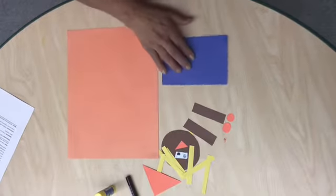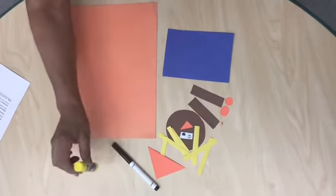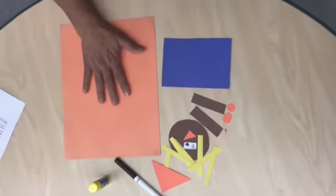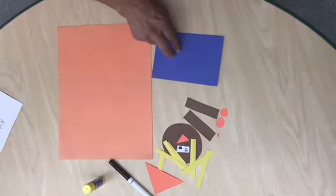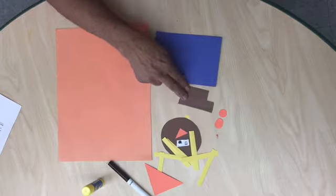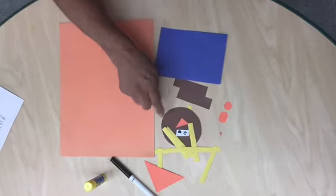The materials that we're going to be using to create our scarecrow is going to be a black marker, glue stick, big orange construction paper, and a rectangle, blue rectangle, two small brown rectangles, three small circles, a big brown circle.